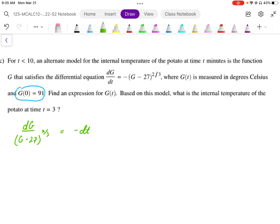Separating the variables out here allows us to get the G's with the G's and the t's with the t's. In this case there is no t. But once we've done that, we then integrate both sides.